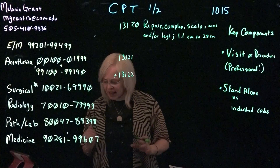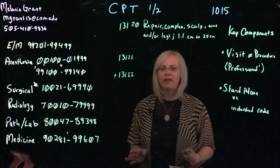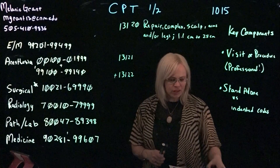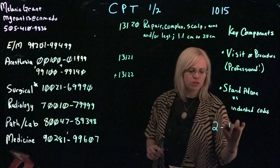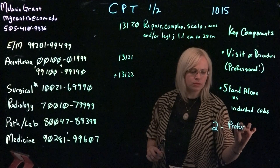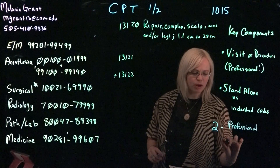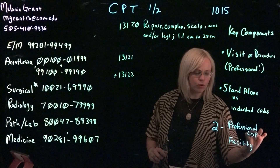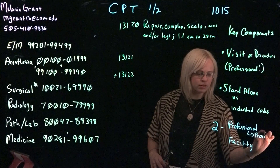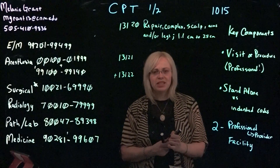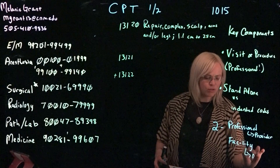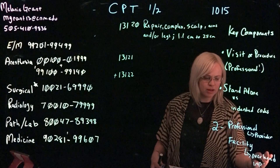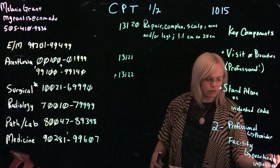A CPT code stands for current procedural terminology, and this is all about the professional or provider-based service. There are two types of coding when we talk about procedures: one is professional and one is facility. Your professional covers the provider or other care service for their time, knowledge, expertise, and abilities, whereas your facility is more like an overhead and is only for the inpatient hospital.